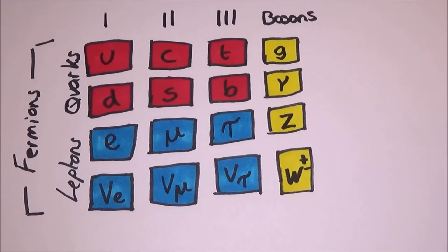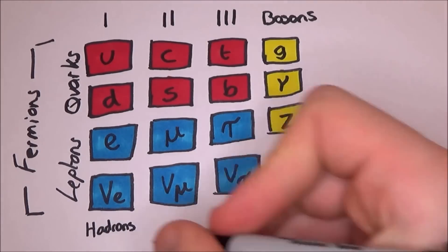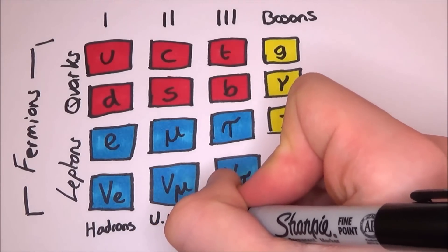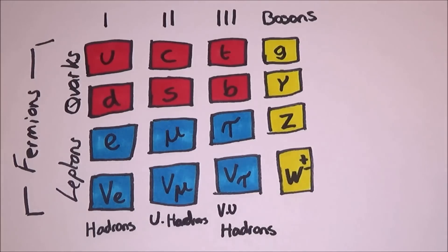Generation one can form together to make hadrons. Generation two can form together to make unstable hadrons. Generation three isn't much different to two, except the top quark is so unstable that it only lasts for an instant. We only know that the top quark exists because of its decay products.